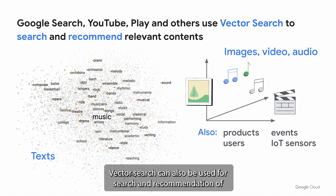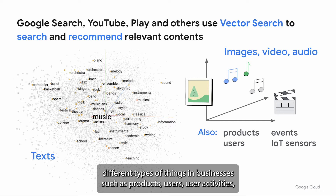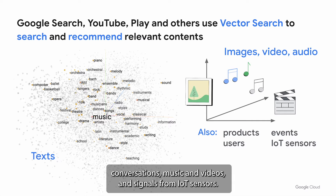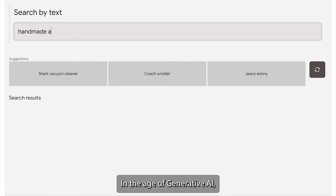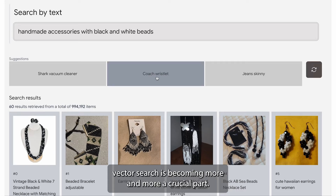Vector search can also be used for search and recommendation of different types of things in businesses, such as products, users, user activities, conversations, music and videos, and signals from IoT sensors. In the age of generative AI, vector search is becoming more and more a crucial part.